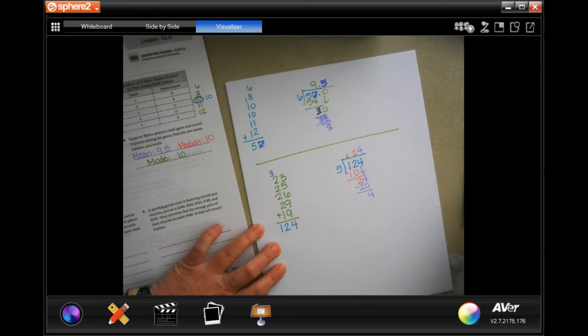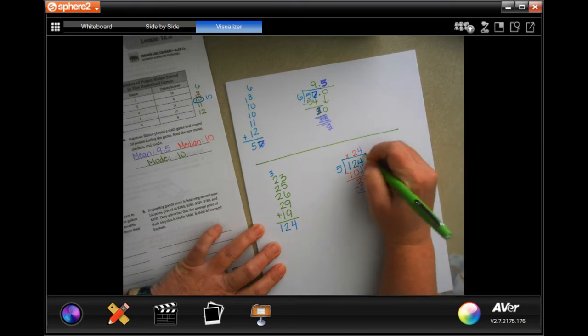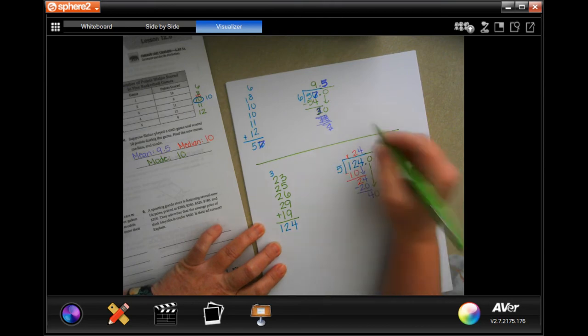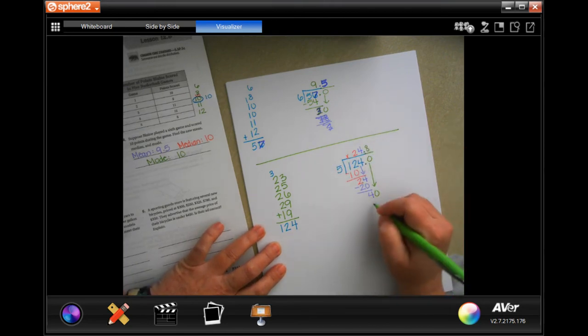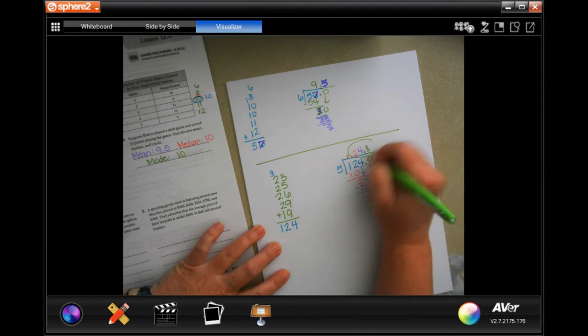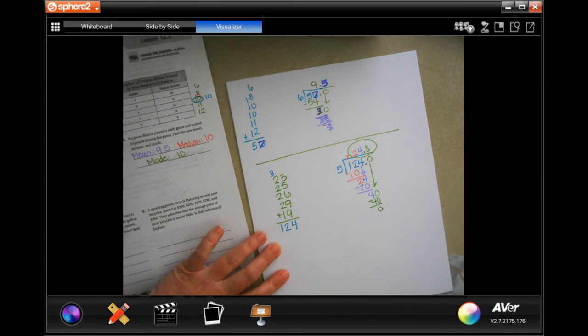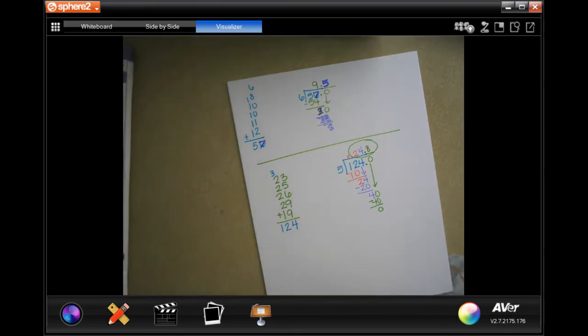2 is smaller than 5, so I'm going to bring down my 4. 5 goes into 24, 4 times. 4 times 5 is 20. Subtract. Get 4. Now, I'm going to add a decimal and a 0, and bring that 0 down, and 5 goes into 40, 8 times. 8 times 5 is 40. Subtract. Get 0. So, their average, or their mean, is 24.8.